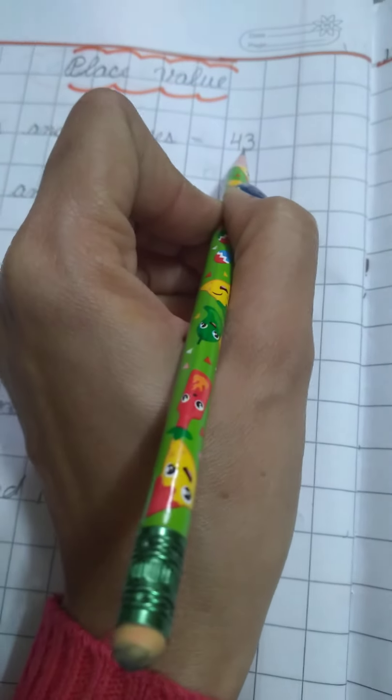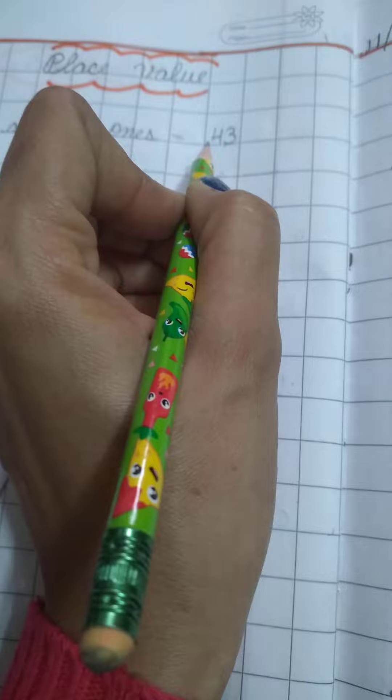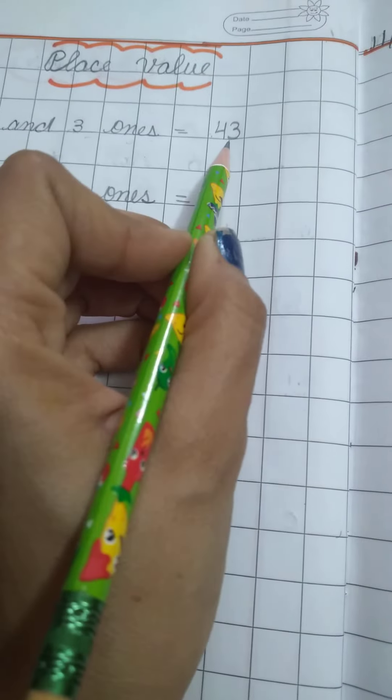Because which number came in the tens place? 4. And in the ones place we have 3. One more.